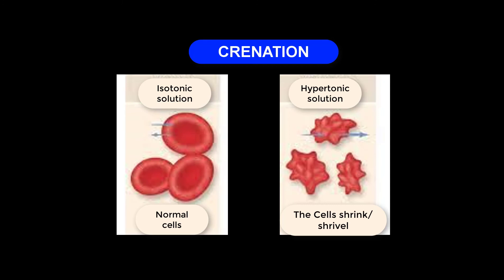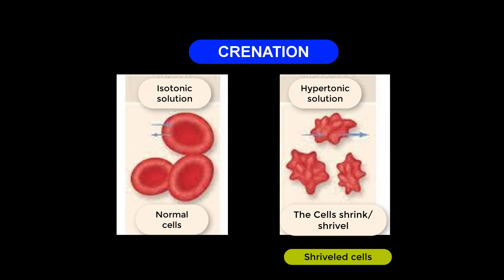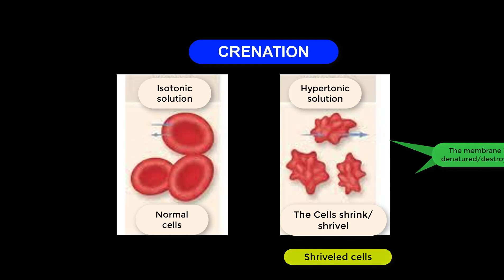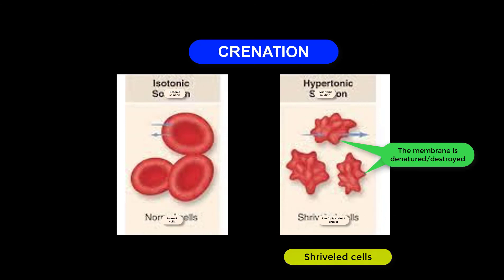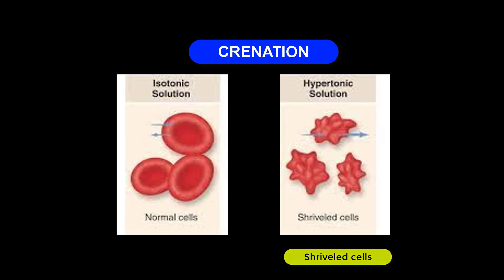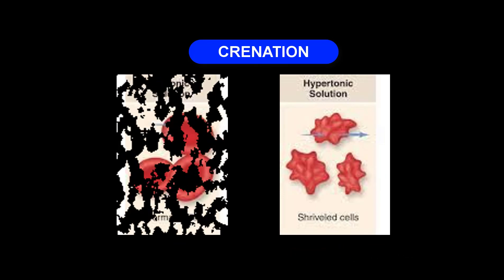We call those cells crenated cells, or we may also call them shriveled cells. You can see there is an arrow here showing the direction through which the water molecules move — from the cell to the outside environment into that highly concentrated solution. When the red blood cells have been crenated through this process, they may end up dying because the membrane may not perform its function properly. It is denatured, which may lead to the death of the cells — we call it denaturation of cells.